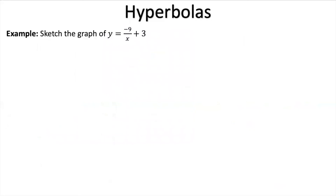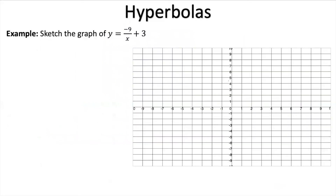Now let's figure out how to sketch the graph of a hyperbola. First, identify your a and q values. The very first thing to do is find your asymptotes: one will always be x = 0 (the y-axis), and the other will always be y = q. In this example, q = 3, so the asymptote is y = 3. Draw the asymptote y = 3 with a dashed line and label it.